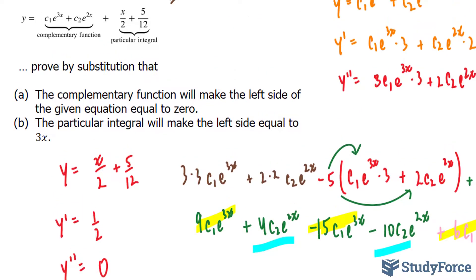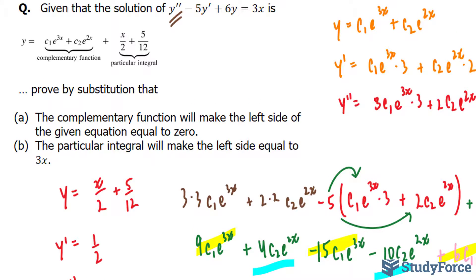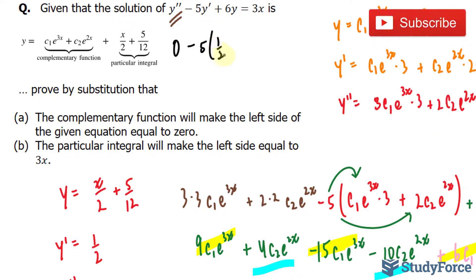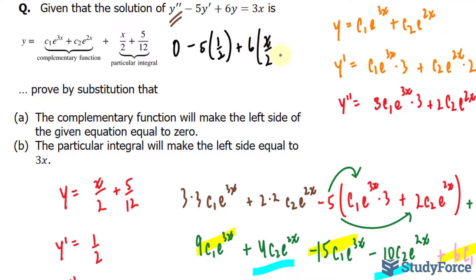Now I'll substitute these values in. Y double prime equals 0. Minus 5 times 1/2, plus 6 times the expression x over 2 plus 5 over 12. And this is supposed to equal 3x.